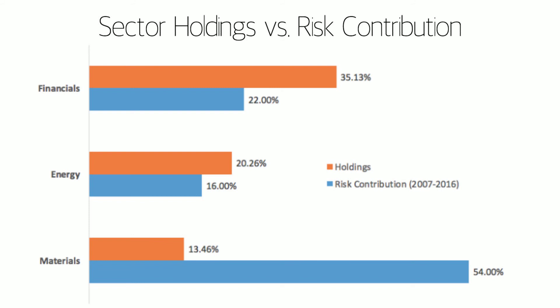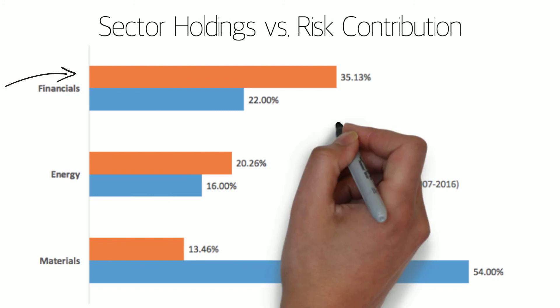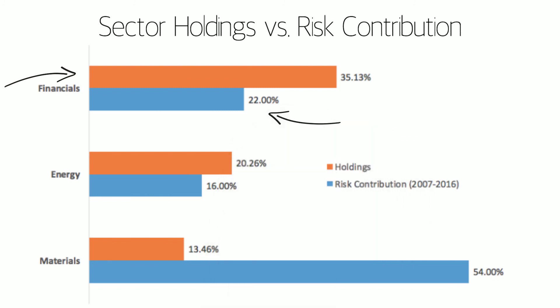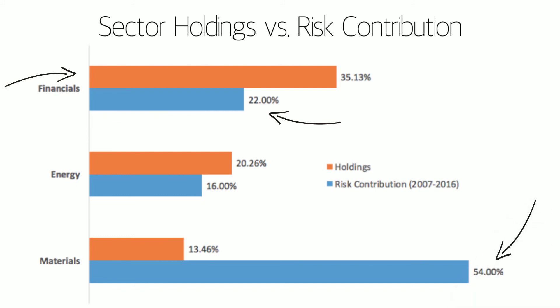Notice how the financial sector, despite carrying the most weight of the holdings, contributed much less risk to the index overall in the last nine years, while the material sector has contributed over 50% of the risk due to its volatility.